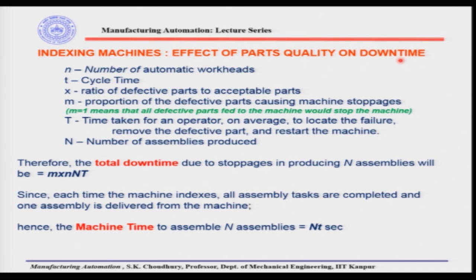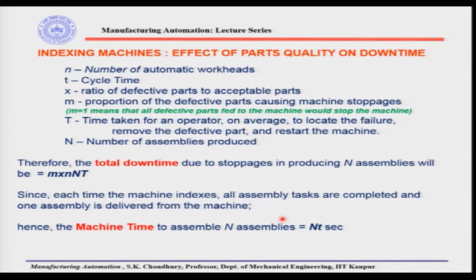For that, we have taken some parameters. The total downtime is m × x × n × T, where m is the proportion of defective parts causing machine stoppages, x is the quality level of parts, small n is the number of automatic workheads in the assembly line. Capital N is the number of assemblies being produced, and capital T is the time taken for an operator to diagnose and restart the machine. The machine time to assemble N assemblies, if the cycle time is small t, is N × t.